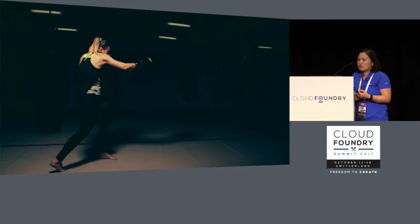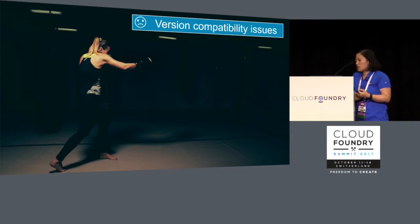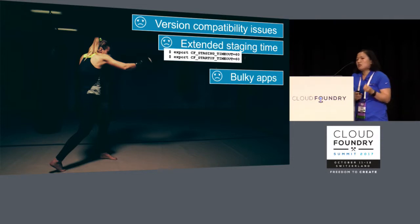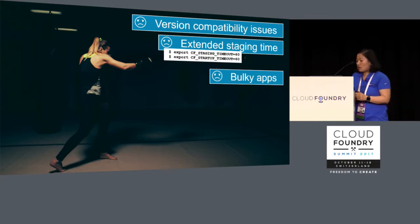There are also a lot of challenges using a customized R buildpack. First of all, there are a lot of version compatibility issues — certain libraries don't work together. It's difficult for the end user to figure out until they push the apps to the cloud, and then there will be lots of difficulties changing version compatibility across different versions. It's just a headache.